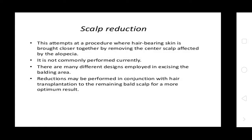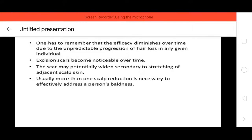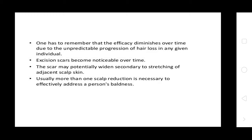Scalp Reduction. This is a procedure where hair-bearing skin is pulled together by removing the center scalp affected by alopecia. It is not commonly performed currently. There are many different designs for excising the balding areas. Reduction may be performed in conjunction with hair transplantation for a more optimal result. The result may deteriorate over time due to the unpredictable progression of hair loss. The excision scar becomes noticeable over time and may widen due to stretching of adjacent scalp skin. Usually more than one scalp reduction is necessary to effectively address a person's baldness.